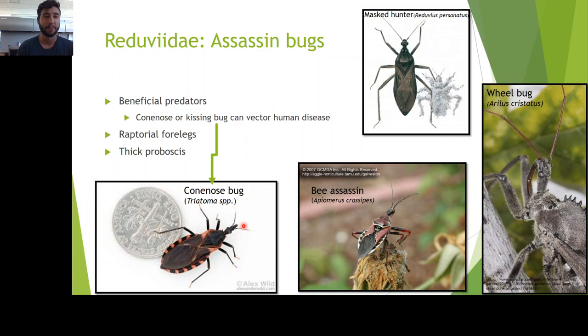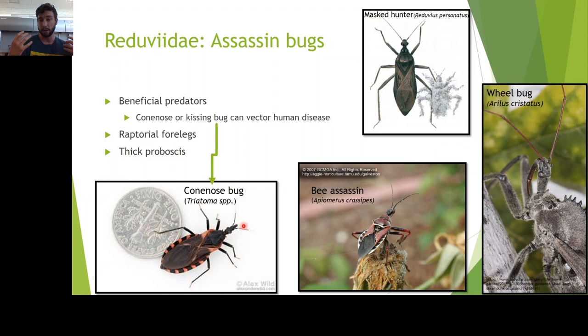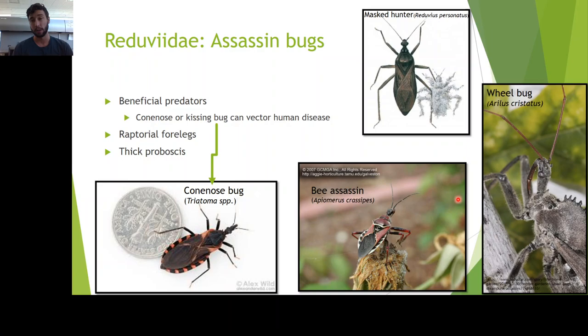Reduviidae — assassin bugs. These guys have an amazing name and they live up to it. They're beneficial predators that sit and wait, then pounce on prey — often pest species in our gardens or backyards. They insert their proboscis into living prey and begin digesting them right then and there. To do that, they have a really thick proboscis. You can see it on this wheel bug, which is more common in the east — you won't see many wheel bugs in Utah or Nevada — but across many other species that thick proboscis is present.